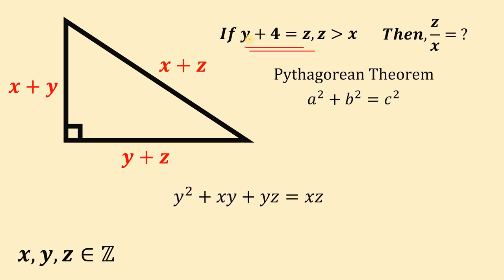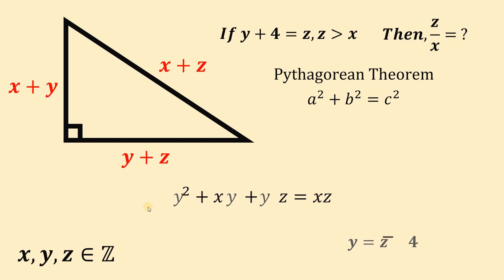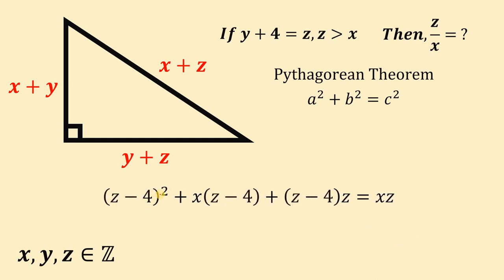Using the given condition that y plus 4 equals z, we subtract 4 from both sides to get y equals z minus 4. We can now replace all instances of y in our equation with z minus 4. Substituting gives: z minus 4 quantity squared plus x times z minus 4 plus z minus 4 times z equals xz.